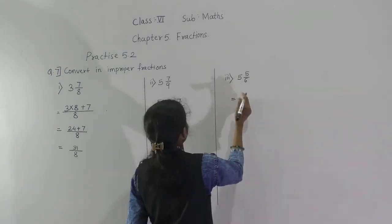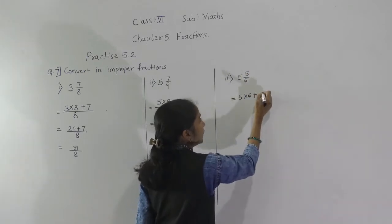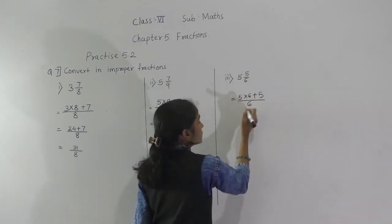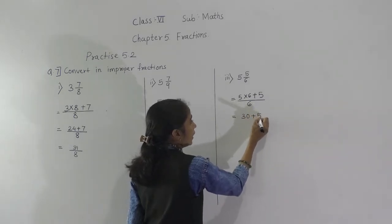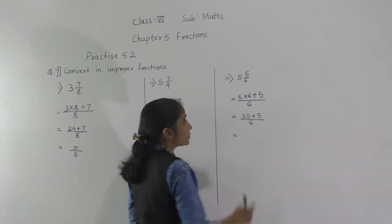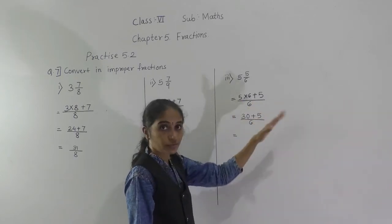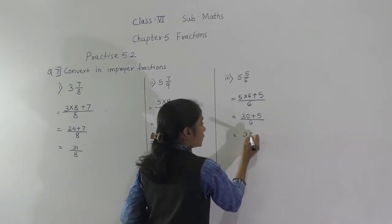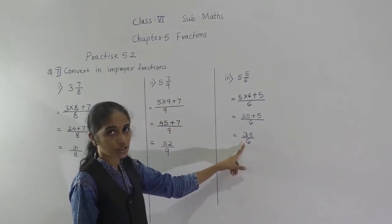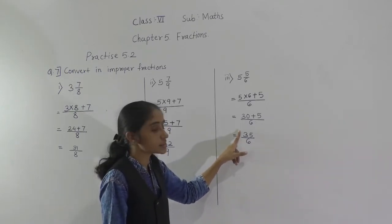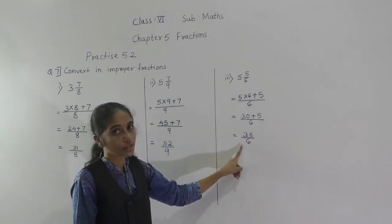Next example: 6 and 5 upon 6. We multiply 5 by 6 and add the numerator 5. 5 sixes are 30, plus 5 is 35 upon 6. Remember: first multiply, then add. So 35 upon 6 is an improper fraction because the numerator is greater than the denominator.